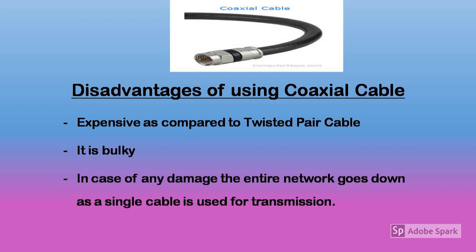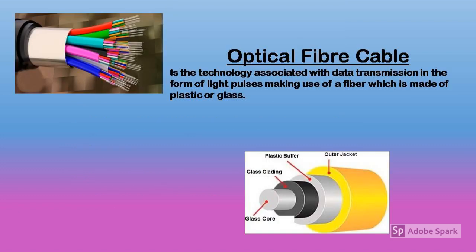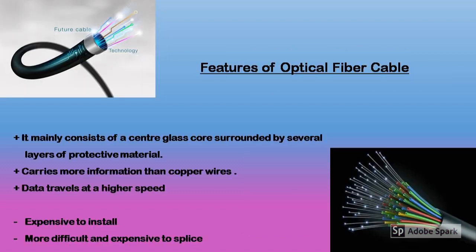The next type of wired transmission media is optical fiber cable. Optical fiber is the newest form of transmission media. Instead of transferring data over copper wires, these cables contain optical fibers made of high-quality glass or plastic that transmit data via light rather than pulses of electricity. It consists of a glass core surrounded by several layers of protective material like glass cladding, plastic buffer, and an outer jacket. Only a small portion of the cable holds the optical fiber; the remaining area provides mechanical structure for protection and strength.